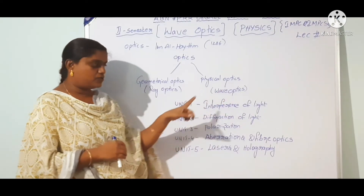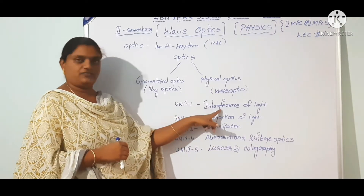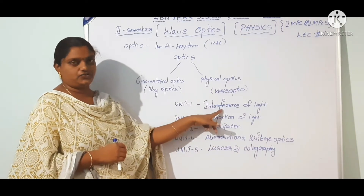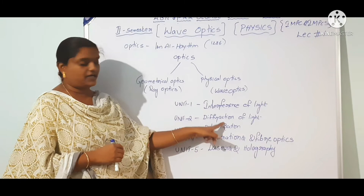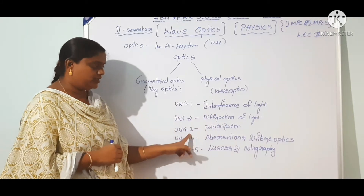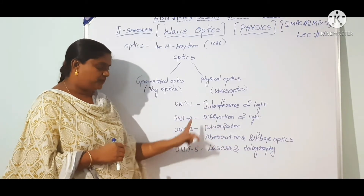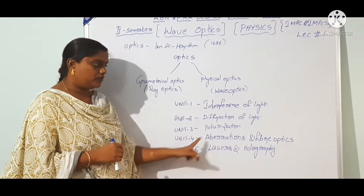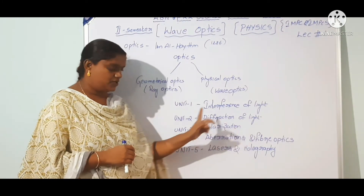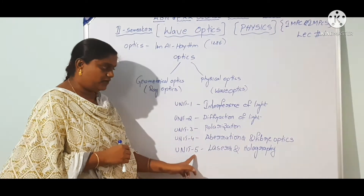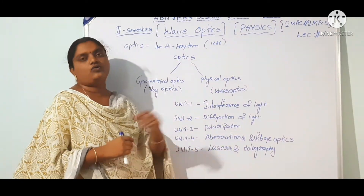We will cover five units in this course. Unit 1 is interference of light. Unit 2 is diffraction of light. Unit 3 is polarization. Unit 4 is aberrations and fiber optics. Unit 5 is lasers and holography.